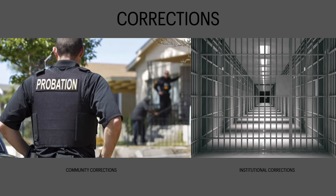Let's talk about a couple of definitions. One of the components of the criminal justice system is corrections. Corrections refers to the supervision of persons arrested for, convicted of, or sentenced for criminal offenses. And there are two types of corrections structures within the criminal justice system: community corrections and institutional corrections.